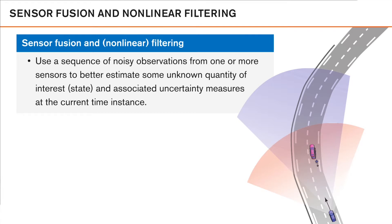Now, let's assume that we have so-called sensor models for both the radar and the camera that describe these strengths and weaknesses. We can use these together with the methods and algorithms that you will learn in this course to combine or fuse the information from both sensors. With the aid of the sensor models, we will make sure that we use the strengths of both sensors to get a better idea of the state of this vehicle — that is, where it is and where it's heading. In our filters, we call this step where we use our new observations to get a better idea of where the vehicle is as the update step.